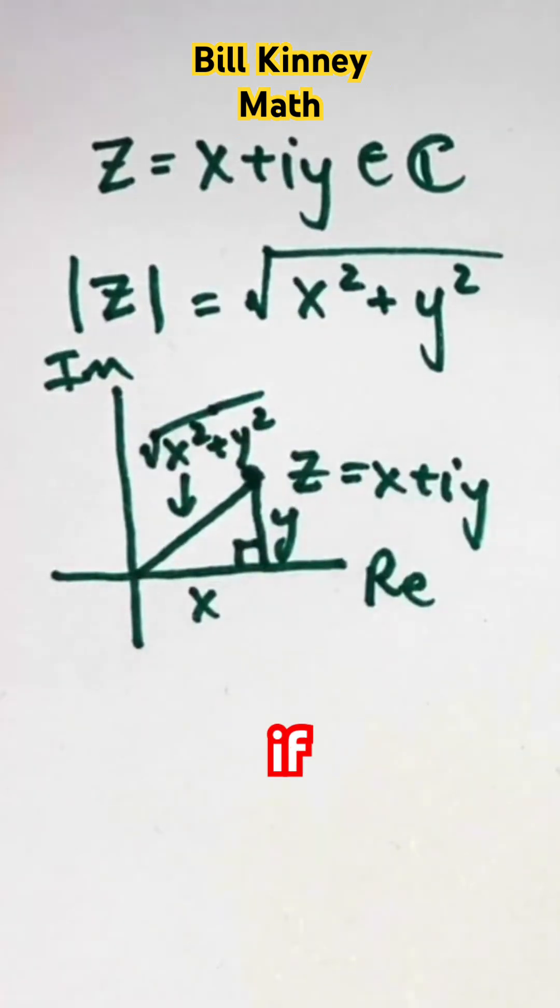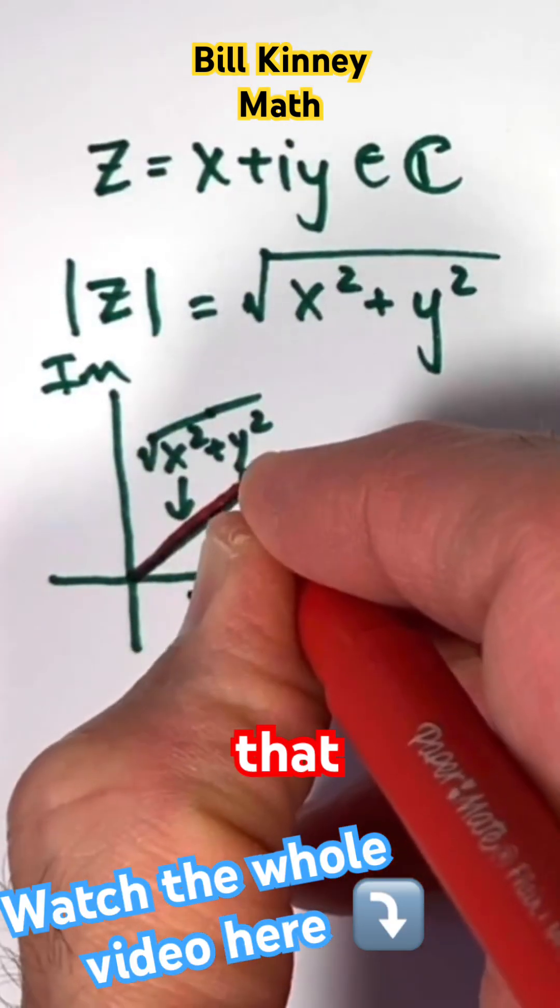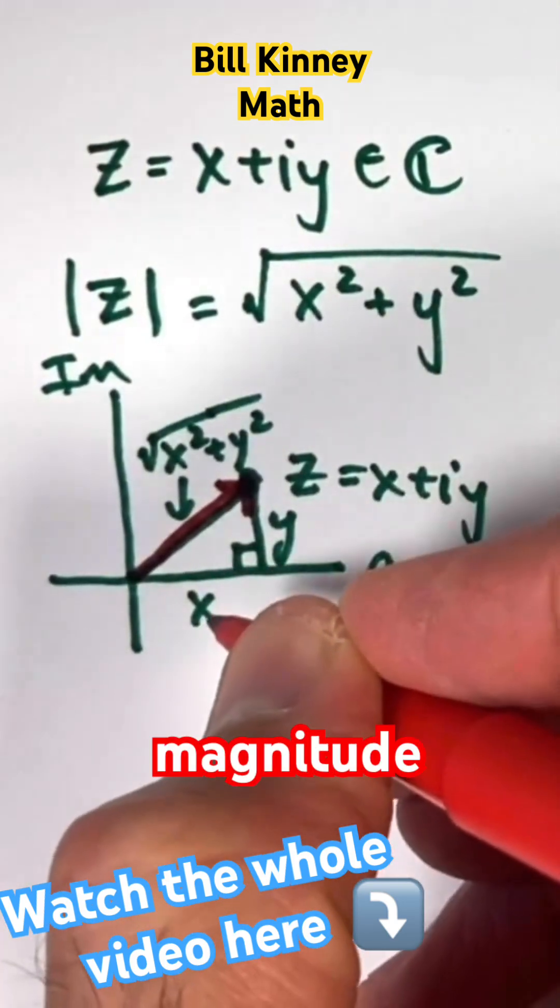Also, if we think of z as a vector, an arrow going from the origin to that point, this quantity also represents the length or magnitude of that vector.